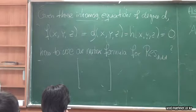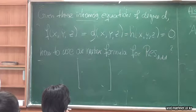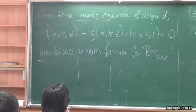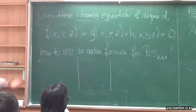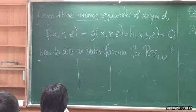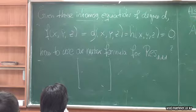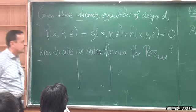So one question is: how many real roots are there? We expect maybe d³ roots by Bézout's theorem — how many of those are real? Another question is: what is the largest z-value of a real root? So let's concentrate on z.